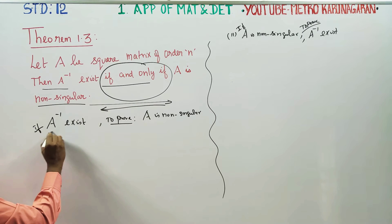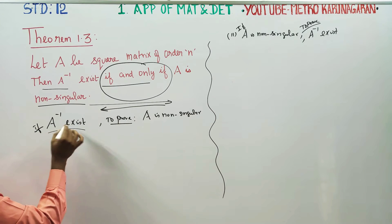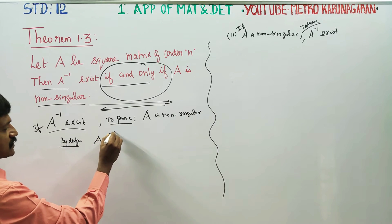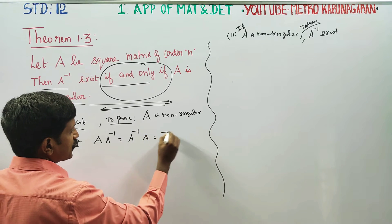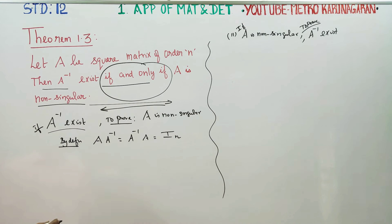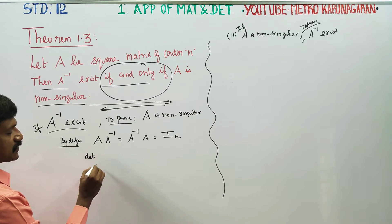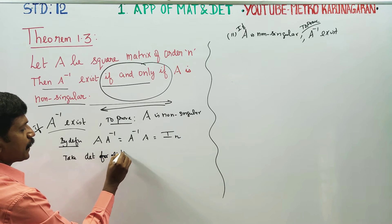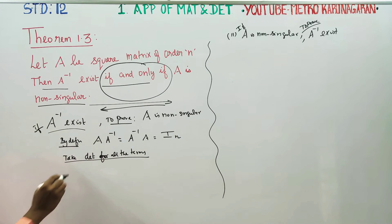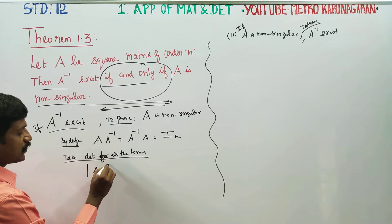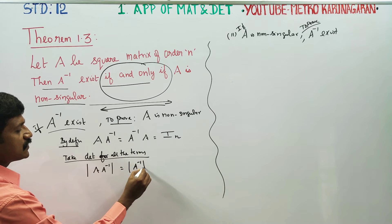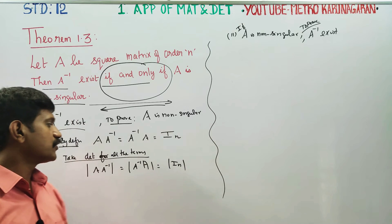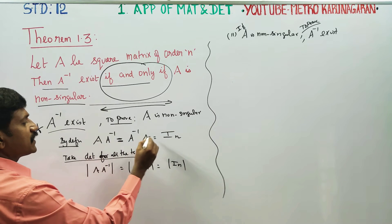For the first proof: assume A inverse exists, then we have to prove A is non-singular. A inverse will be the inverse matrix — that is the rule. Take the determinant on both sides for all terms in the equation: determinant of A inverse into A is equal to determinant of I_n.